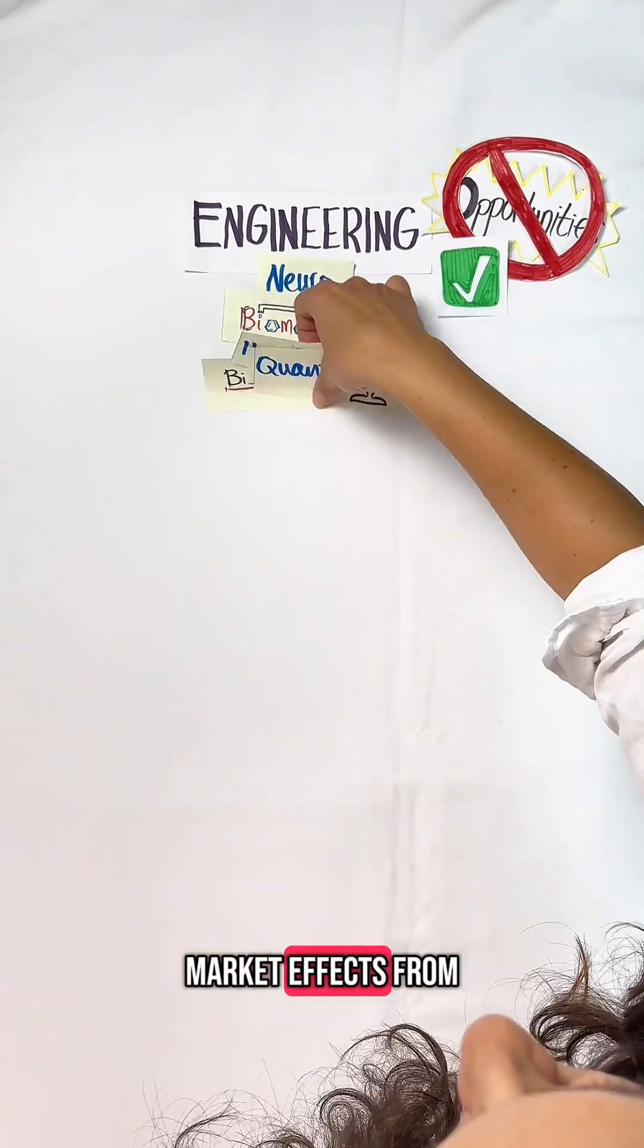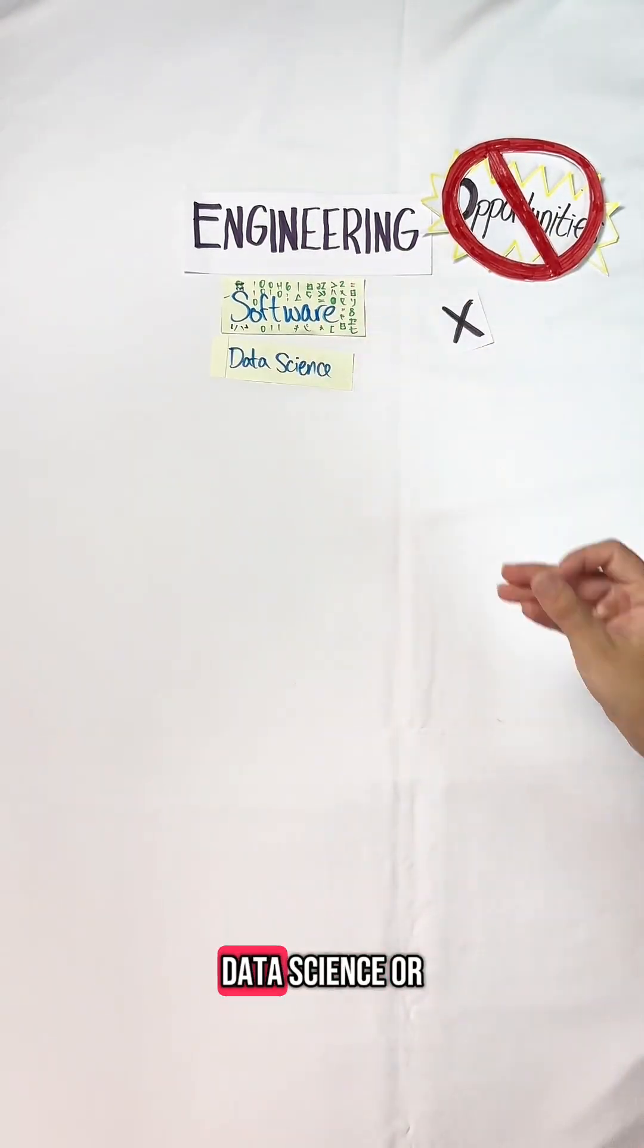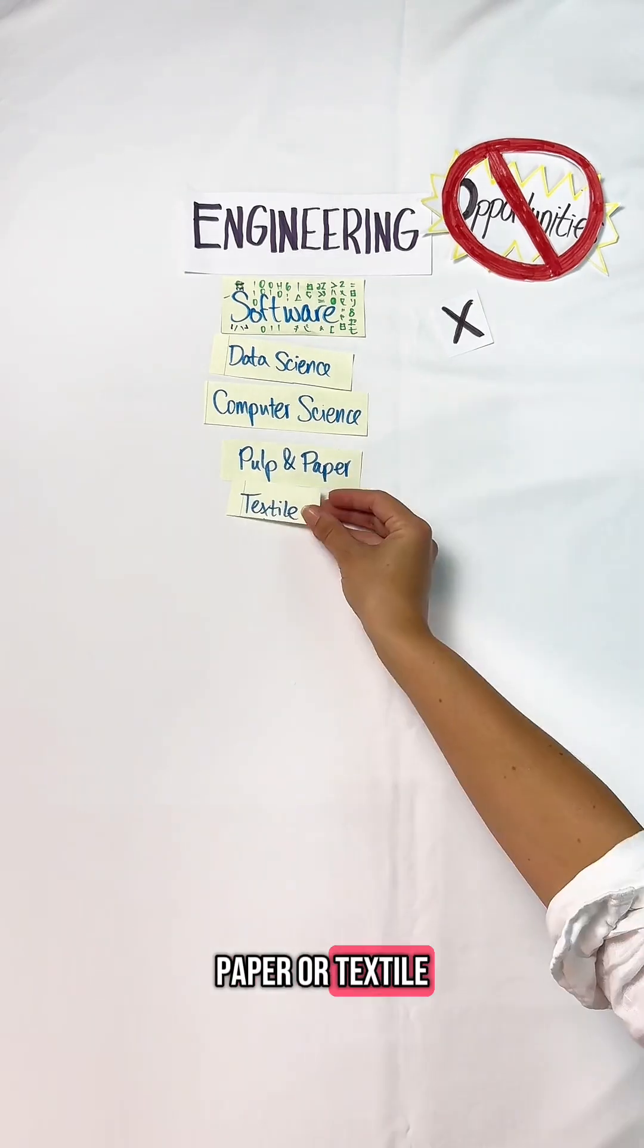Due to job market effects from AI, I do not recommend software engineering, data science, or computer science. Due to shrinking industries, I do not recommend pulp and paper or textile.